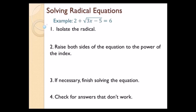Step number 1, I want to isolate the radical. This is going to be kind of similar to the absolute value equations in that the first step is to isolate. Instead of the absolute value, I'm going to isolate the radical in this case. So that means I want to get rid of this 2 right here. So let's go ahead and subtract 2 from both sides. So I end up with square root of 3x minus 5 equals 4.